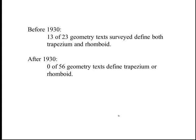Uziskan did some research on this and looked into geometry textbooks — he found 23 before 1930 and 56 after 1930. He found that 13 of the 23 geometry texts before 1930 defined both a trapezium and a rhomboid. But after 1930, none of the geometry texts identified these things. So here's a term that had been around for centuries but came out of use around 1930.